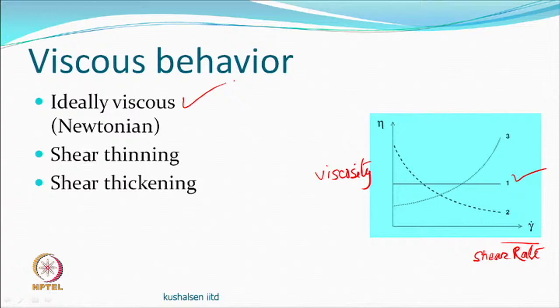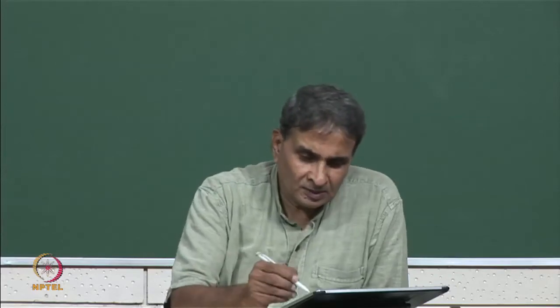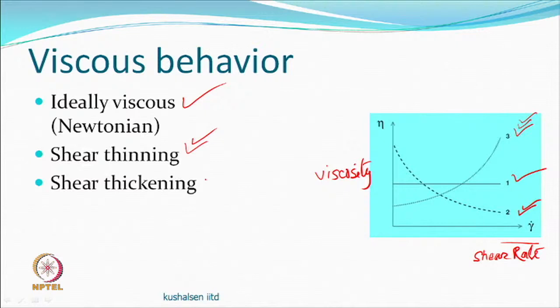One type is shear thinning, represented by a curve where viscosity decreases as shear rate increases. This is quite interesting and important for people doing printing — our printing paste should be shear thinning type. The other type is shear thickening, where viscosity increases with shear rate. These days people are working on shear-thickening solid-liquid fluids for use in body armor: when something hits, viscosity increases suddenly — a very good application.